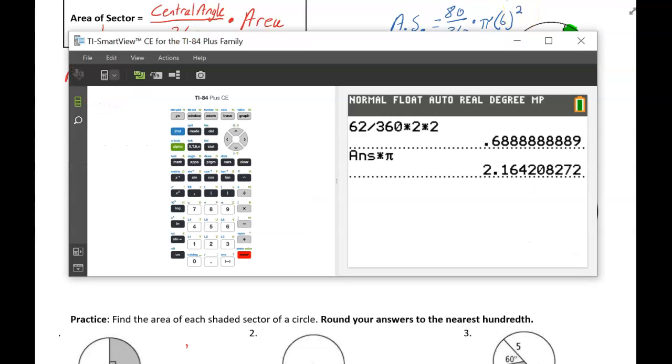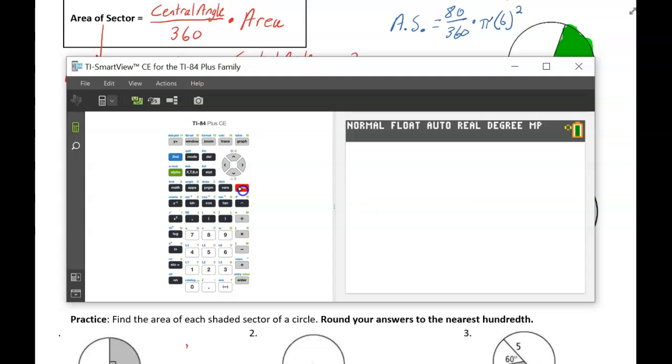So I'm going to show you how to do this on your calculator. So we're going to say 80 divided by 360 times, I'm not going to type in the pi yet, I'll say 36 or 6 squared. So I knew 6 squared was 36, but let's suppose you didn't. You could type in 80 divided by 360 times 6 squared. So you get 8.